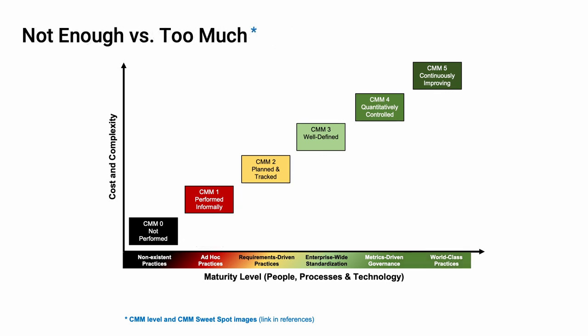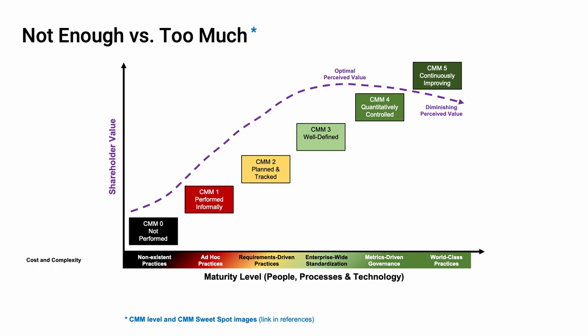As you can imagine, the more sophisticated your processes are, the higher the cost and complexity of implementing them. Let's overlay a couple of additional pieces of information to set our expectations. First, we'll look at shareholder value — this is a perceptual issue. When we have no processes, there's no perceived ROI. As we implement more sophisticated processes, we show greater value. However, at around CMM level 3 and 4, we reach peak perceived value. Beyond that point, it's really difficult for an outside observer to appreciate the value add being contributed.